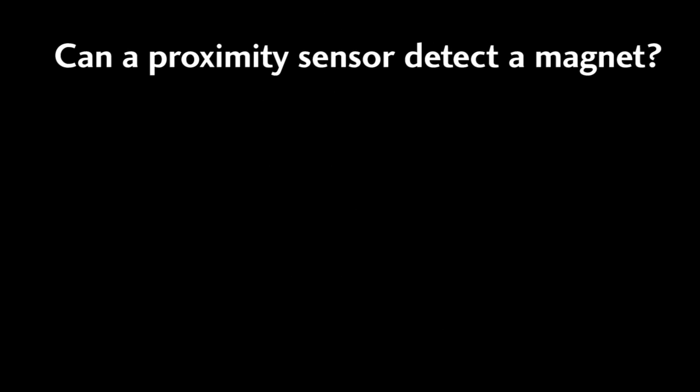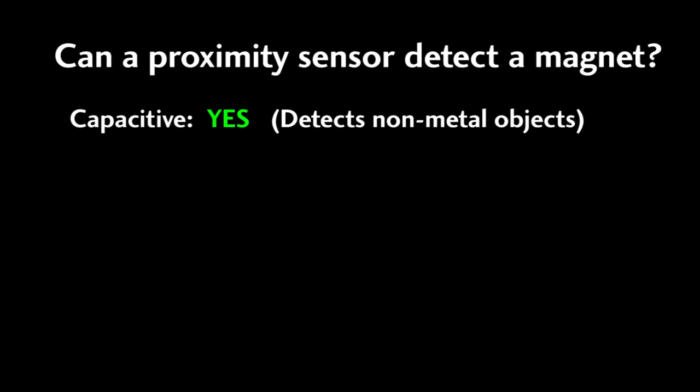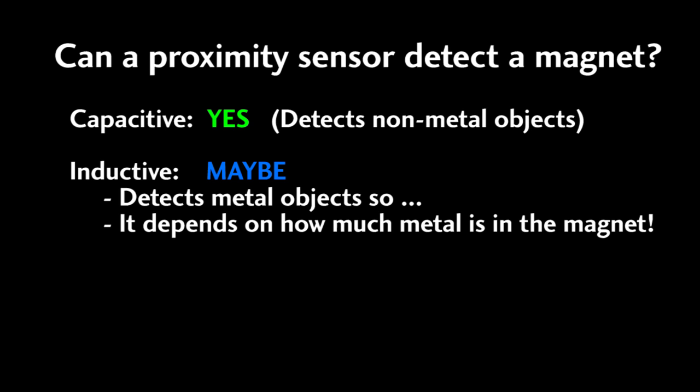Will a magnet trip a proximity sensor? Well, it can. If you have a capacitive sensor, the answer is yes since they detect non-metal objects. If you have an inductive sensor, the answer is it depends on how much metal is in the magnet.